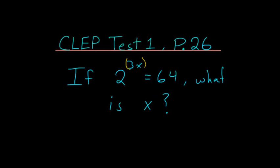First, we can think that if we raise 2 to the 6th power, that we get 64. So in other words, 3x would have to equal 6, or x would have to equal 2.